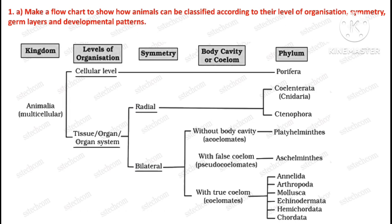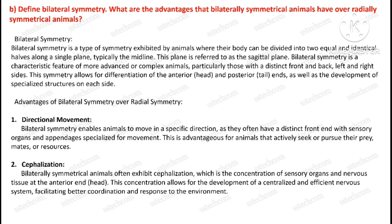Question number one, part A: Make a flowchart to show how animals can be classified according to their level of organization, symmetry, germ layers, and developmental patterns. Part B: Define bilateral symmetry. What are the advantages that bilaterally symmetrical animals have over radially symmetrical animals?